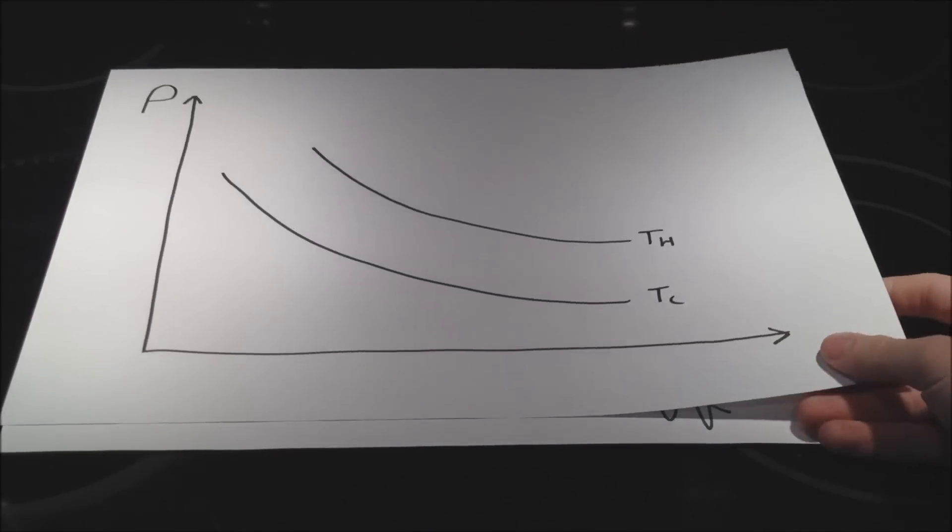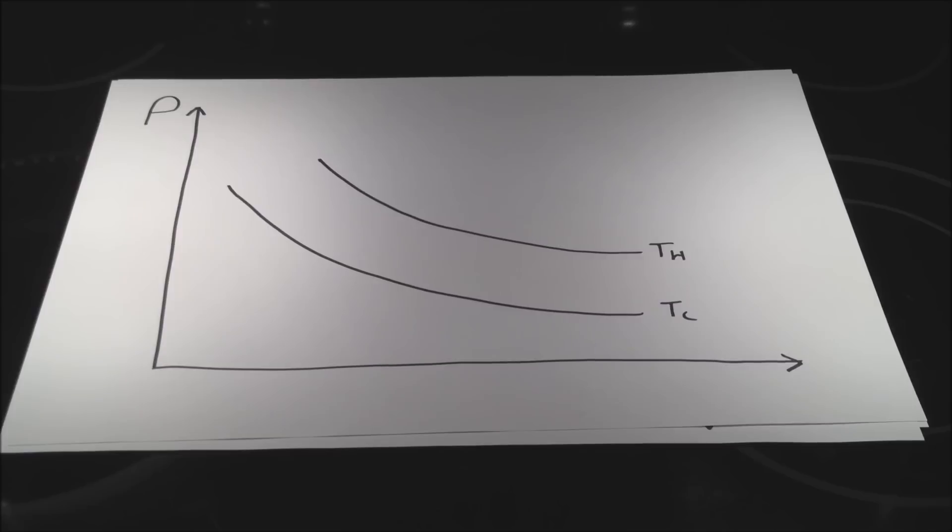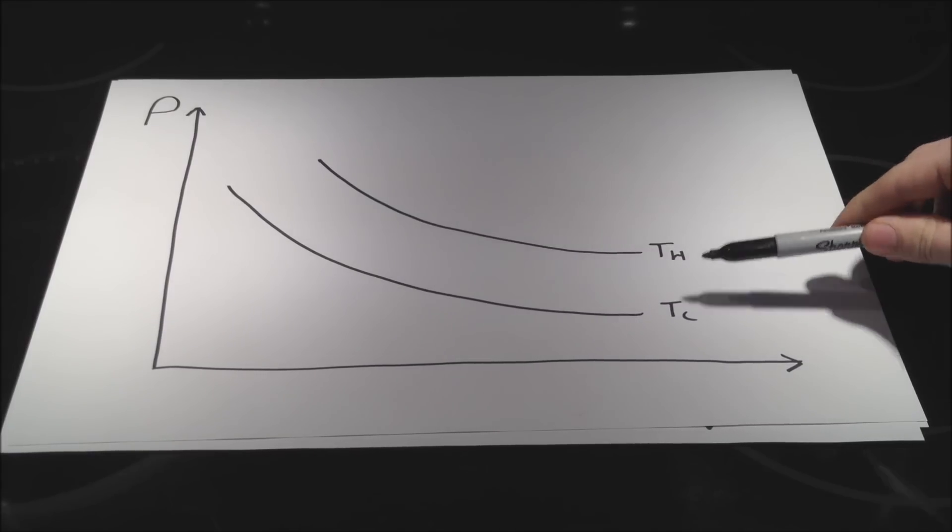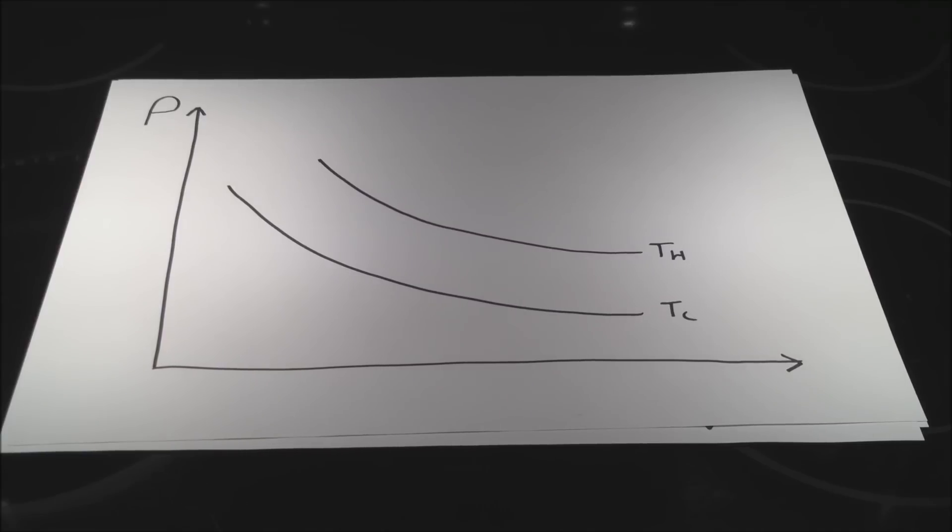So I have here a PV diagram with two possible isotherms: T-hot and T-cold. Now, even though we have these two isotherms,